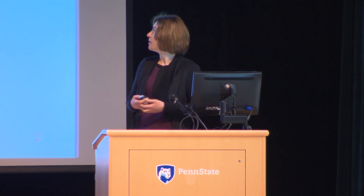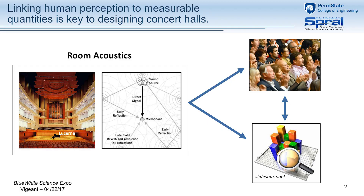As an example, this concert hall here, which is in Switzerland, has many architectural features to help the sound. For example, there's a large reflector above the stage, and the side walls have shaping. The walls and the materials in the hall are going to affect how the sound bounces or reflects around the room.